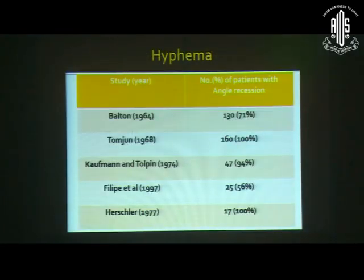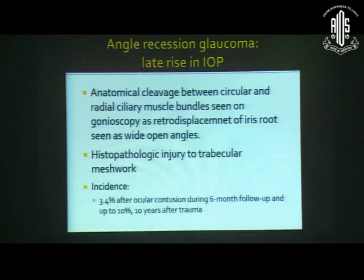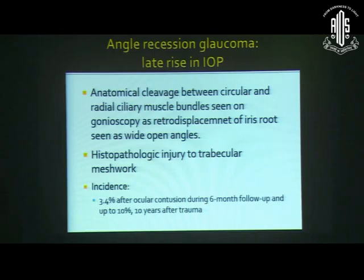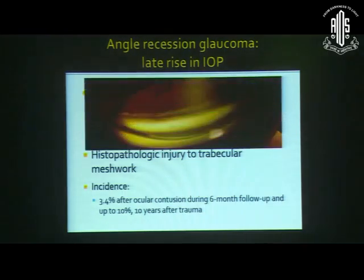Various studies have shown the incidence of angle recession with hyphema varies from 56% to up to 100%. Angle recession indicates anatomical cleavage between the circular and radial-circular ciliary muscle bundles, seen on gonioscopy as retrodisplacement of the iris root with wide-open angles and a prominent ciliary body band. It indicates histopathological injury to the trabecular meshwork resulting in increased IOP. The incidence of angle recession glaucoma is 3.4% after blunt trauma at six months, but may increase up to 10% ten years after trauma — a bimodal presentation.